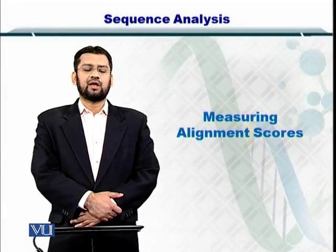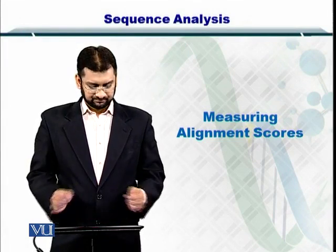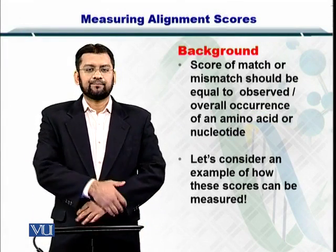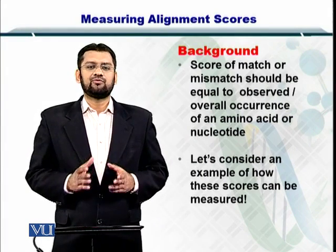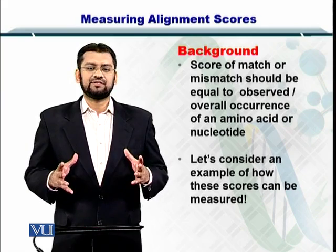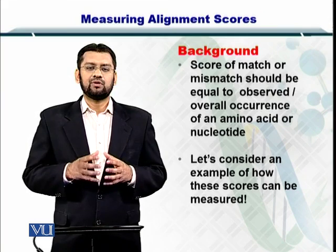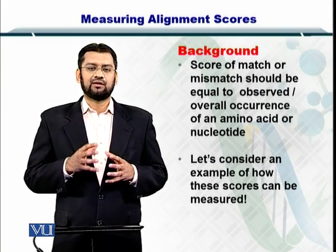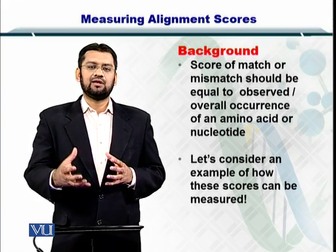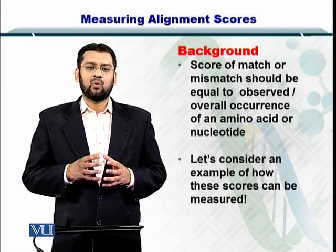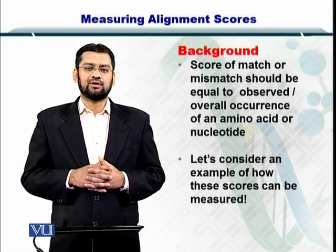We will be looking at how we can measure the alignment scores. You already understand that the scores cannot be uniform for all matches, mismatches, and gap penalties. We need to appreciate the fact that several nucleotides and amino acids are more easily replaced by others, while some others are not that easily replaced or substituted.